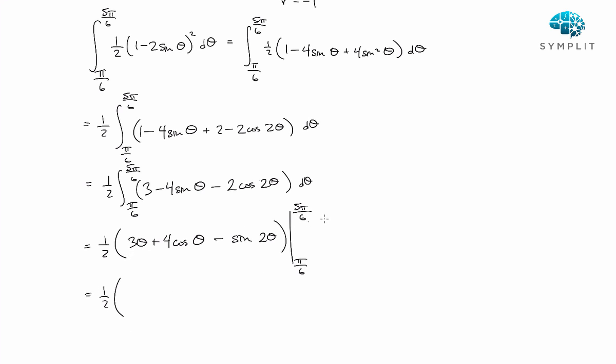All right, so 3 times 5 pi over 6 is 5 pi over 2. Plus 4 times the cosine of 5 pi over 6 is negative root 3 over 2.